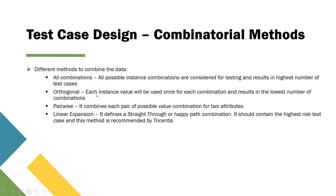The next type is Orthogonal, where each instance value will be used just once for each combination, resulting in a very low number of combinations. The next is Pairwise — it combines each pair of possible value combinations for two attributes, so this will also not result in a higher number of test cases. Then there is Linear Expansion, which defines a straight-through or happy path combination.